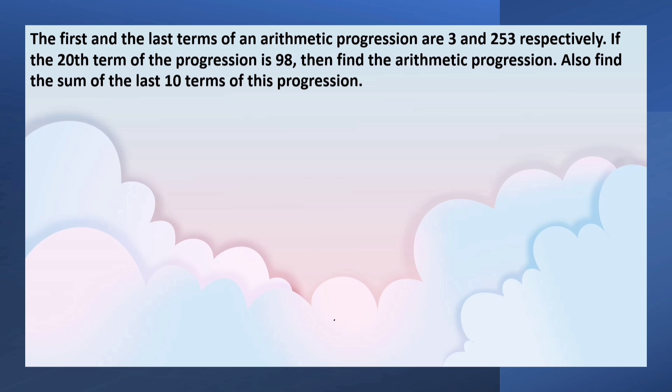We have to find the sum of the last 10 terms. When the last term is 253, we do not know the number of terms. So we can find the number of terms by using the formula AN equals A plus N minus 1 times D.